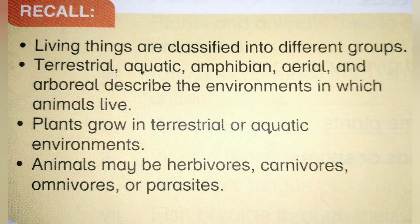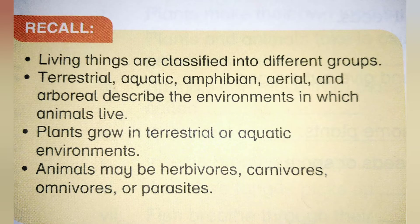These groups include: terrestrial — meaning those living on land; aquatic — meaning those living in water; amphibian — living in both water and land; aerial — living in the air; and arboreal. These describe the terrestrial and aquatic environments in which animals live.